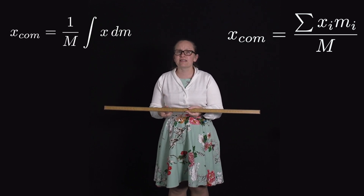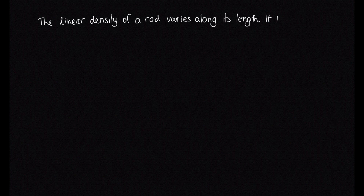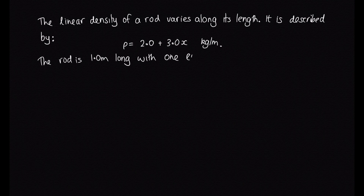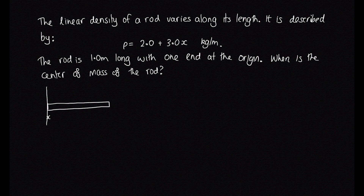Let's look at an example. The linear density of a rod varies along its length, described by ρ = 2.0 + 3.0x kg/m. The rod is 1.0 metres long with one end at the origin. Where is the centre of mass of the rod? To work this out, let's start by drawing a diagram. Here's our rod with one end at the origin at x = 0 and the other end at x = 1.0 metres.